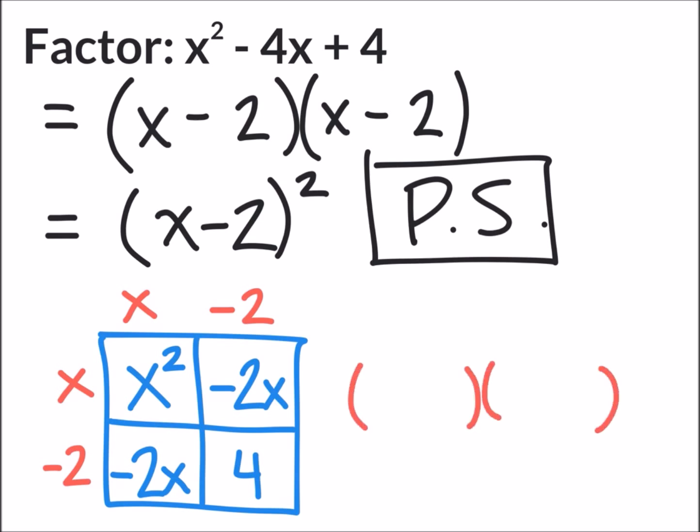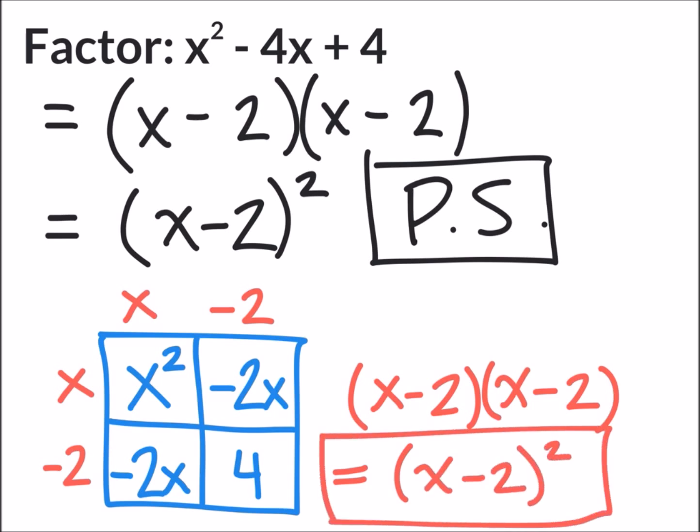And to finish we just write out the side lengths expressed as binomials (x-2)(x-2). Our final answer would be (x-2)² since each bracket is identical.